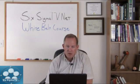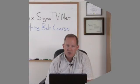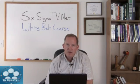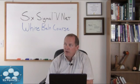Then we have the project champions. They're responsible for ensuring the success of black belt projects through day-to-day coaching, mentoring, resource provision, and barrier removal. They may also help green belts depending on how mature the organization is. Basically, they're the ones that remove barriers and clear obstacles out of the way, or step in when help is needed.